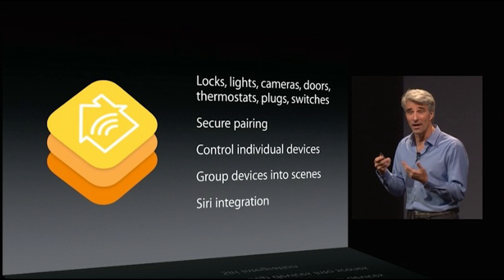One of the final things is the ability to integrate all your different home products into HomeKit — things like smart lights and other devices that connect straight with the iPhone. HomeKit allows Siri integration, device grouping, and secure pairing. As you can see, it supports locks, lights, cameras, doors, thermostats, plugs, and switches. The prices on some of those smart home devices need to come down a bit before I'd personally buy them, but it's still a great feature to incorporate right into the iPhone.